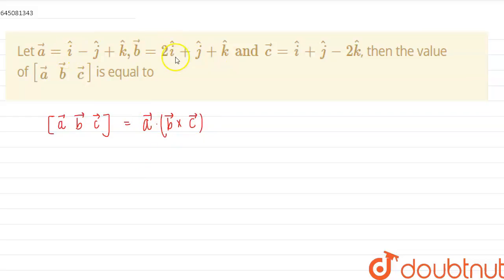abc vector is equal to a dot (b cross c) vector, and this is given as the coefficient of the three vectors a, b, and c and the coefficients of i cap, j cap, and k cap.